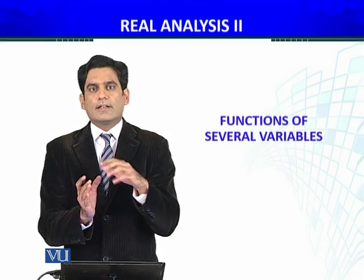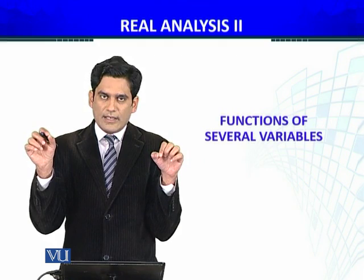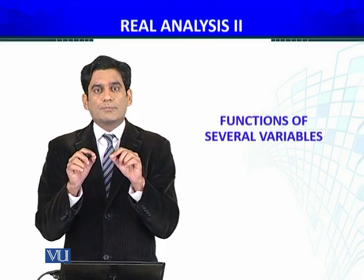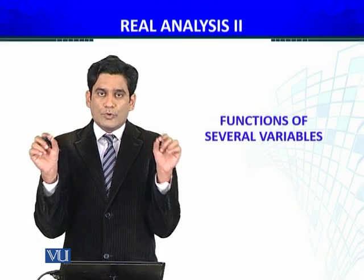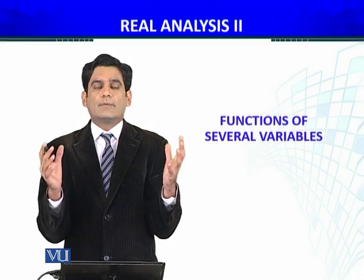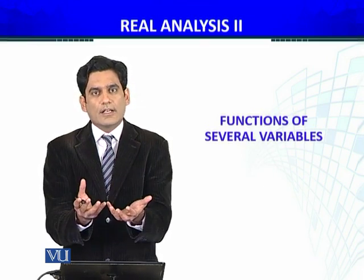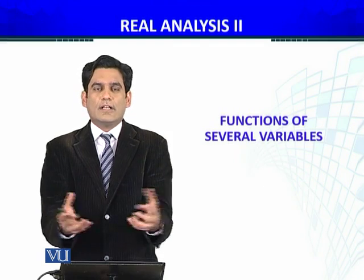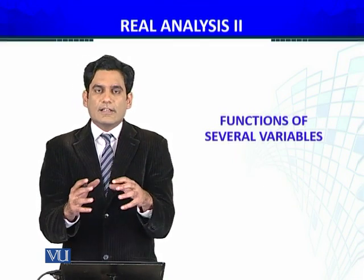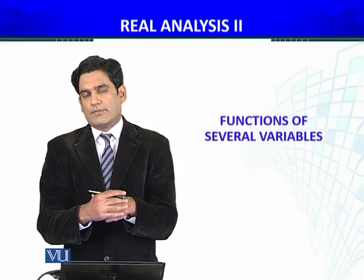जैसे एक circle हो — circle का diameter क्या है? Exactly दो end points, circle की boundary पे, passing through the center। वैसे तो बेशुमार points होते हैं, लेकिन center से pass करने वाला line segment उसको diameter कहते हैं। बाकी कोई से भी points circle की inside या boundary पे लें, उनका distance diameter से कम होगा। इसी तरह हम generalize करेंगे — it's not necessary that your set is a circle in R2; कोई भी set हो, उसके लिए Rn में diameter define करेंगे।